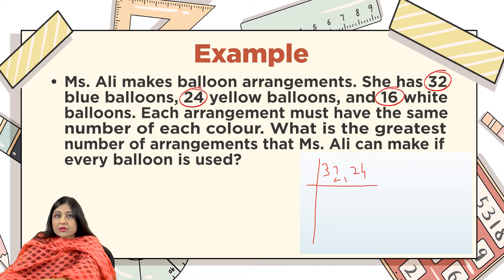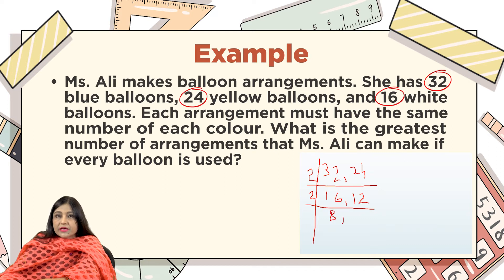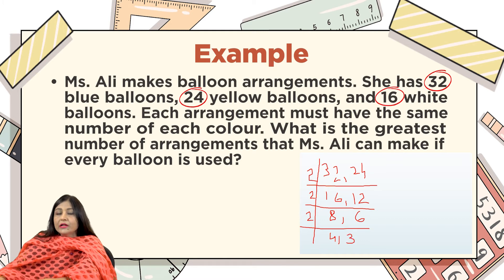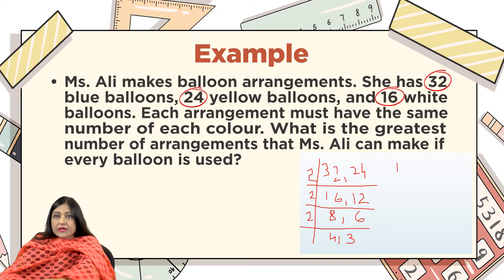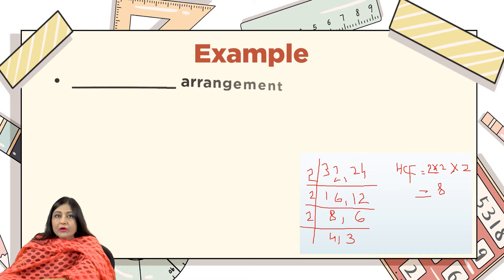32 and 24 are both even numbers, so I start with the smallest prime number 2. 32 ÷ 2 = 16, 24 ÷ 2 = 12. These are still even, so divide by 2 again: 8 and 6. Divide by 2 again: 4 and 3. Now 4 and 3 are not divisible by the same number. The HCF is found by multiplying the common prime factors: 2 × 2 × 2 = 8. So the HCF is 8, meaning 8 arrangements of balloons can be made.